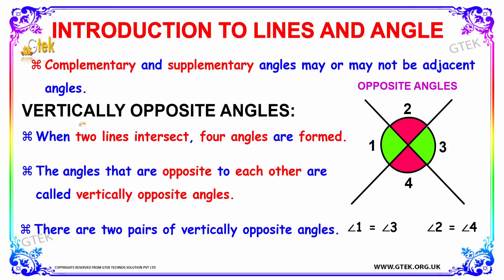Now let's discuss about vertically opposite angles. When two lines intersect, four angles are formed. The angles that are opposite to each other are called vertically opposite angles. Here angles 1 and 3 are vertically opposite angles, and angles 2 and 4 are vertically opposite angles — so there are two pairs of vertically opposite angles.